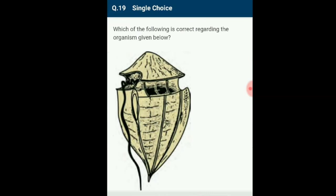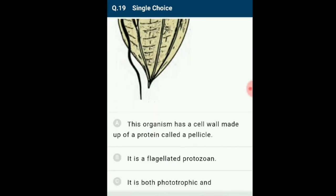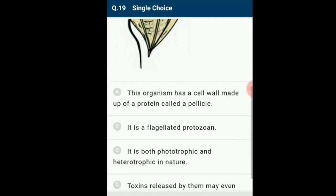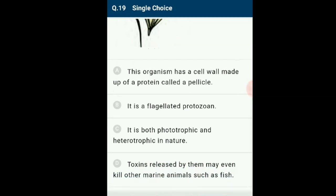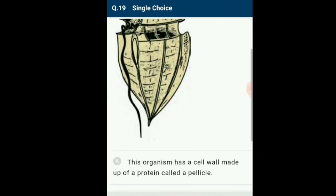Question number 19: Which of the following is correct regarding the organism given? The organisms are mostly marine and photosynthetic, appearing yellow, green, brown, blue or red depending on the main pigments in their cells. The cell wall has stiff cellulose plates on the outer surface, and most have two flagella — one longitudinal and one transverse — in a furrow between wall plates. Very often, red dinoflagellates such as Gonyaulax undergo rapid multiplication, making the sea appear red (red tides). Toxins released can kill other marine animals. The correct option is D.